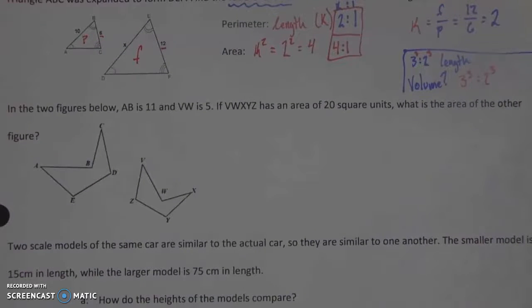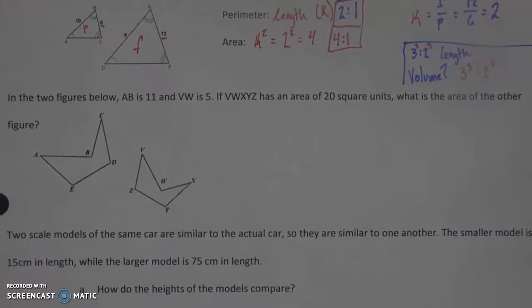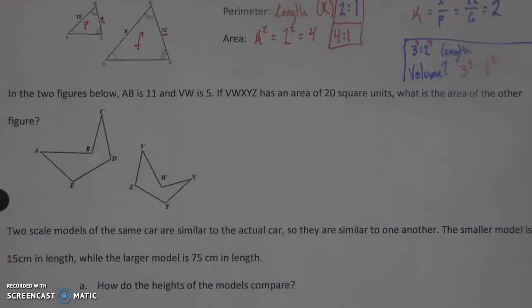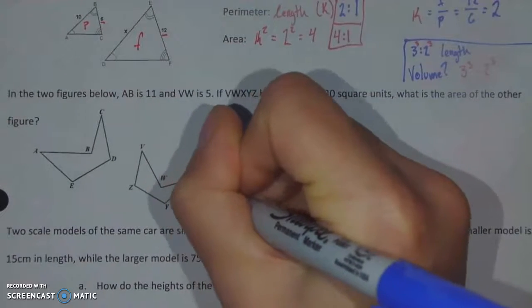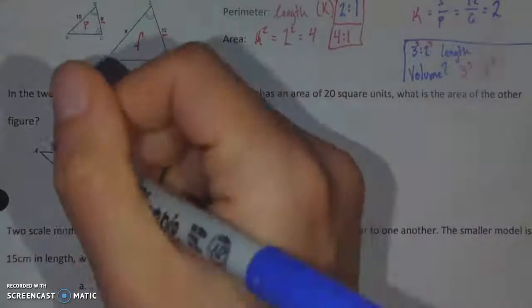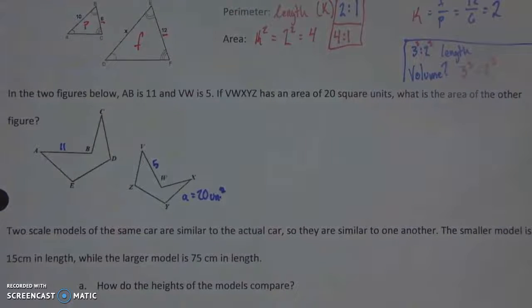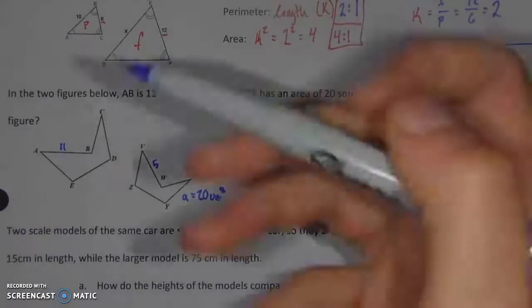All right so let's look at one more at least today and then we'll pick up from here tomorrow. In this one what we're looking at is two figures where AB has a length of 11, VW is 5. If VWXYZ has an area of 20 square units, what is the area of the other figure? So we know that the area of this one is equal to 20, and we know that AB here is 11 and VW is 5.